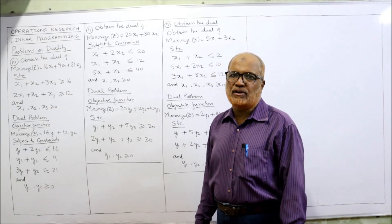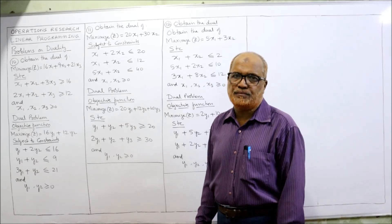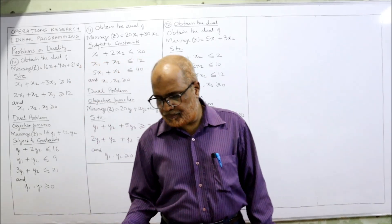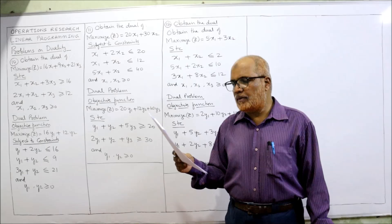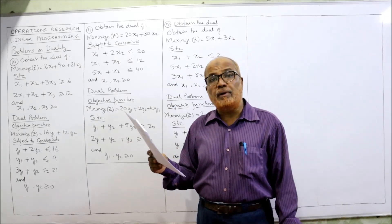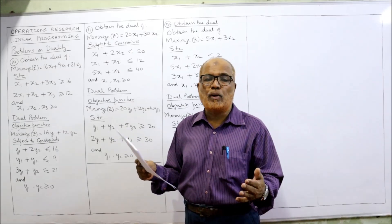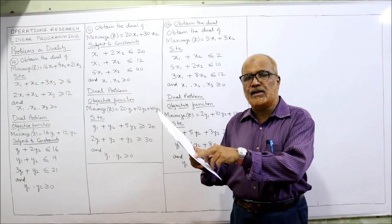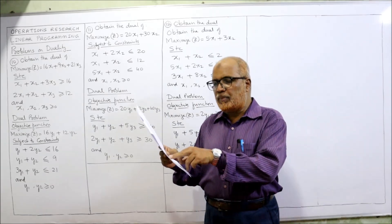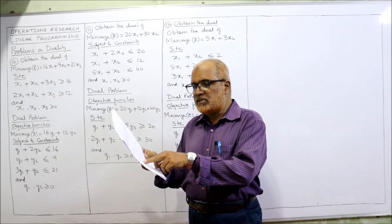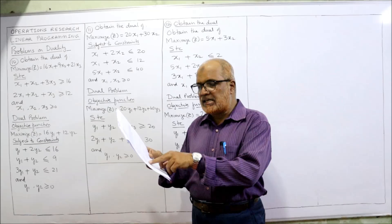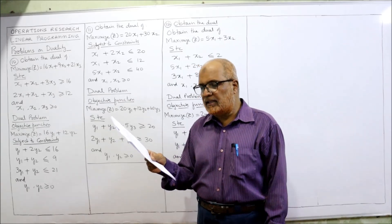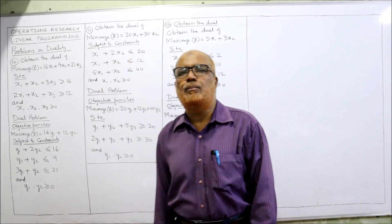Everything becomes opposite — very easy to convert. Now for problem 11: Obtain the dual of — Maximize Z = 20x1 + 30x2, subject to: x1 + 2x2 ≤ 20, x1 + x2 ≤ 12, and 5x1 + x2 ≤ 40, with x1, x2 ≥ 0. The original primal is maximization, so the dual will become minimization.